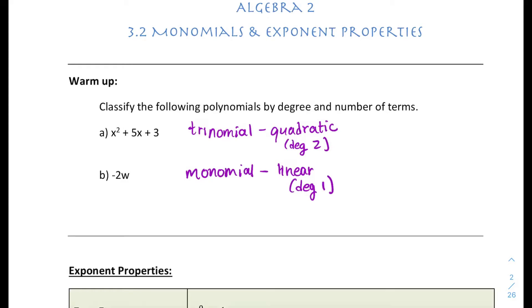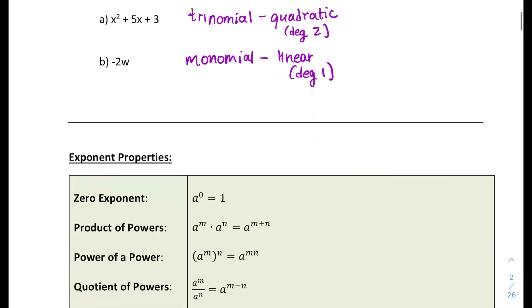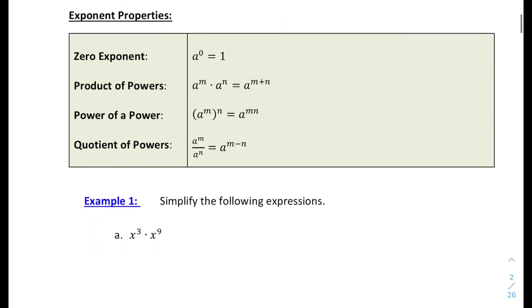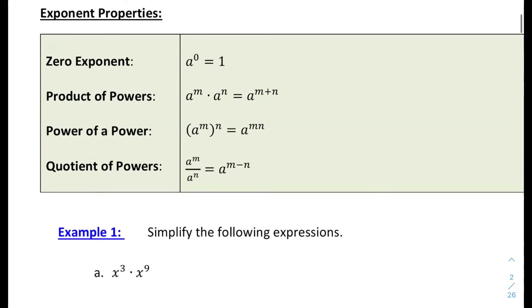We are going to refresh your memory on some exponent properties today. So if you have any value raised to the zero power, it's equal to one. So say you have 576x to the third, that entire quantity raised to the zero power, guess what? It's just one.